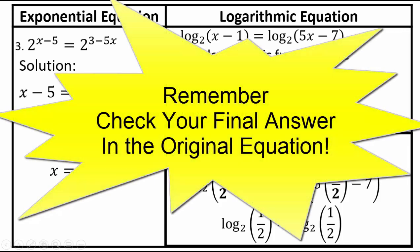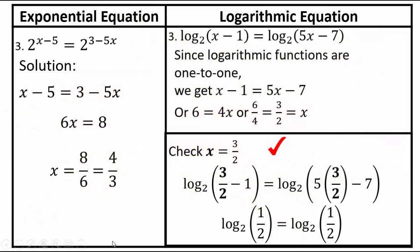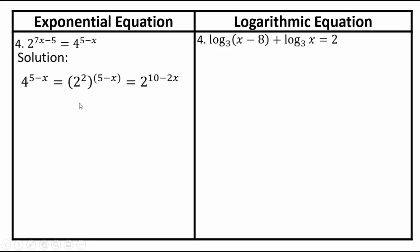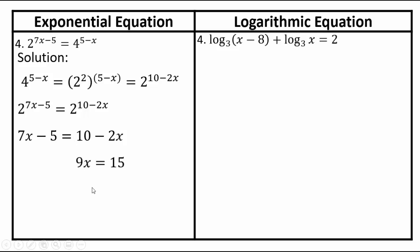It's extremely important to check your solution so you never get a wrong answer. Let's solve 2 to the power 7x minus 5 equals 4 to the power 5 minus x. Since 4 can be written as 2 squared, rewrite 4 to the power 5 minus x as 2 squared to the power 5 minus x, then multiply the exponents to get 10 minus 2x. Now we have 2 to the power 7x minus 5 equals 2 to the power 10 minus 2x, so 7x minus 5 must equal 10 minus 2x. Solving gives 9x equals 15, so x equals 5/3.